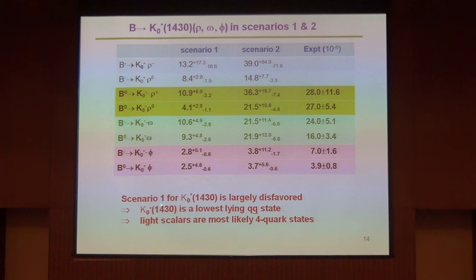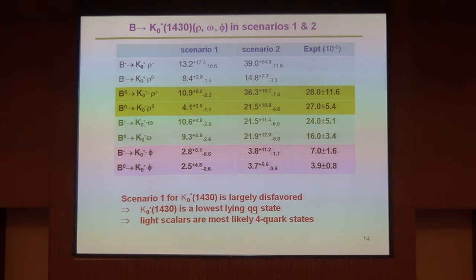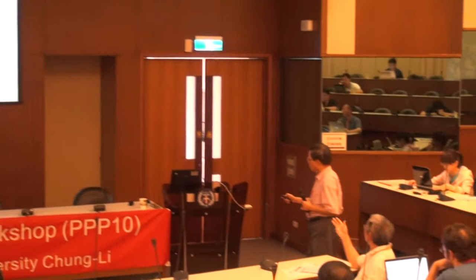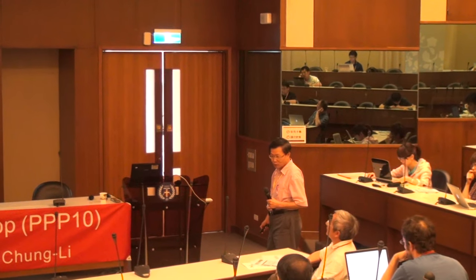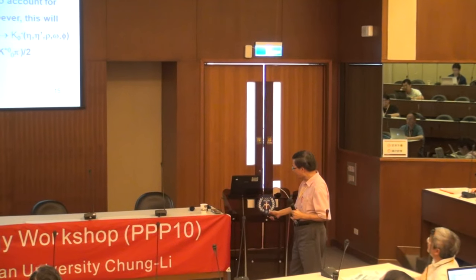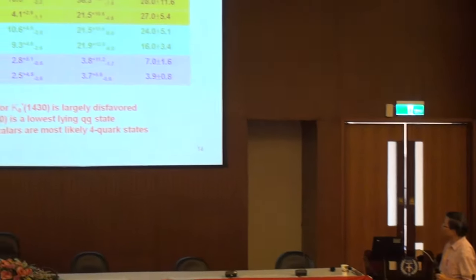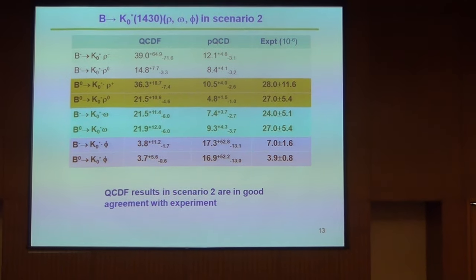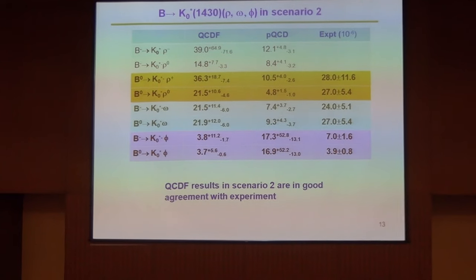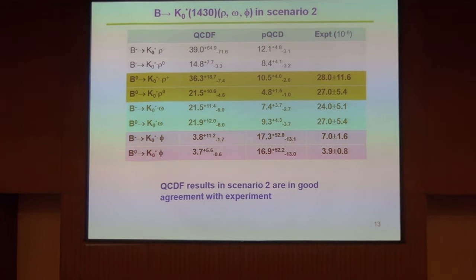In scenario two, K₀*(1430) is the lowest-lying PQq̄ state. So I say that heavy scalar mesons are most likely a bound state of four quarks. For the PQCD calculation, they also have two scenarios following our framework, so one of them will be closer to data. But scenario two is usually much larger than scenario one in their calculations. Maybe Chen or Yu are keen to perform some recalculation.